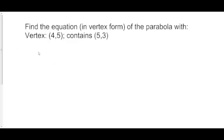In this example we want to find the equation in vertex form of the parabola that has the vertex at 4 comma 5 and that contains the point 5 comma 3. So we know that vertex form is y minus k, here k is the y coordinate of my vertex which is 5, equals a times x minus the x coordinate of my vertex which is 4 squared.